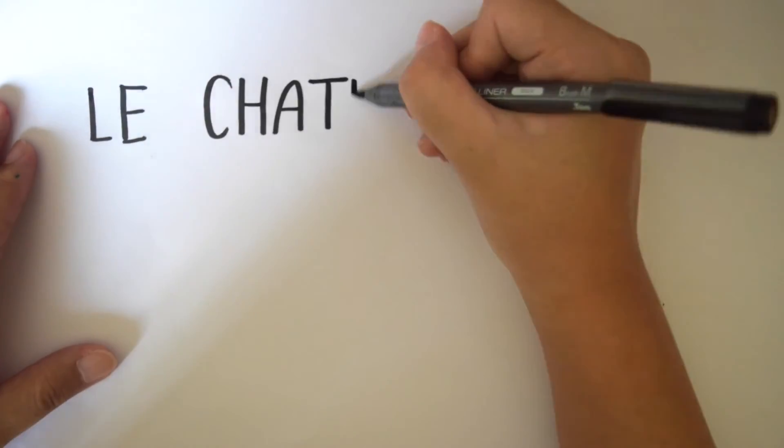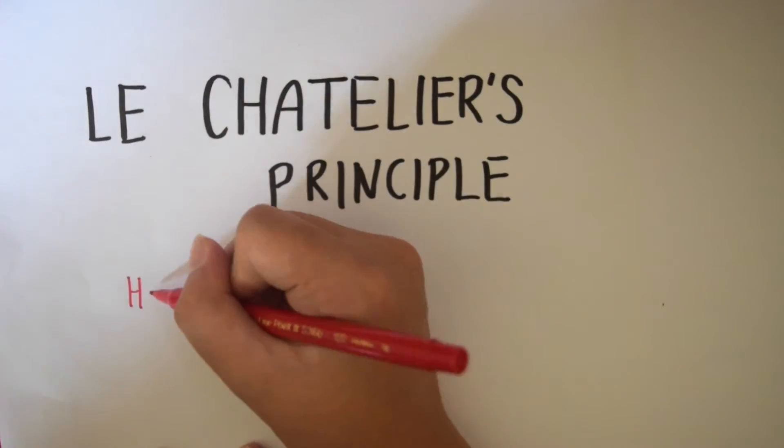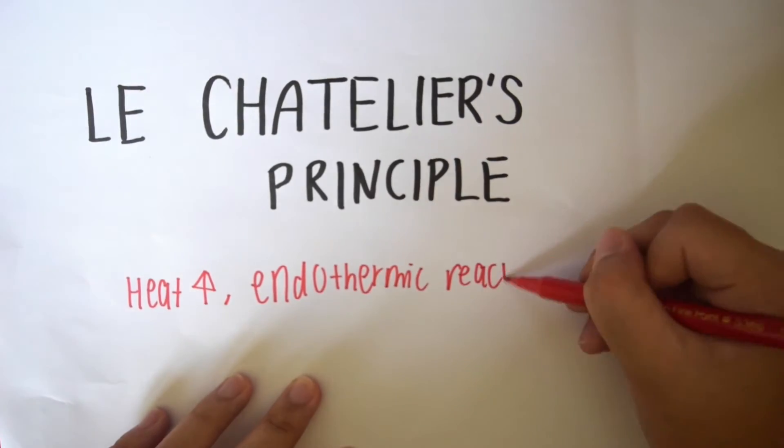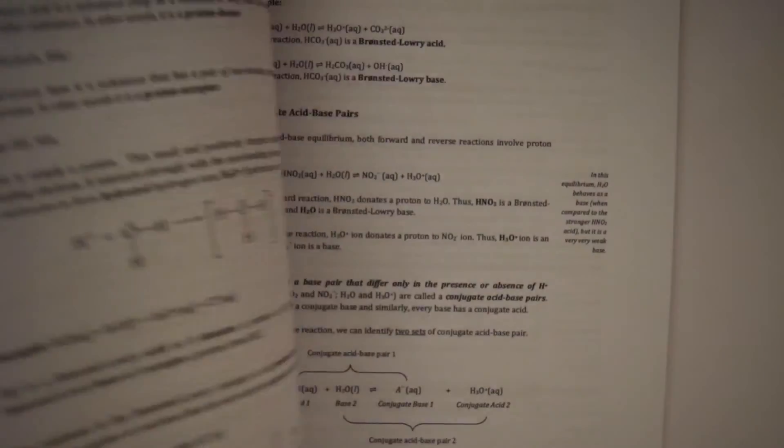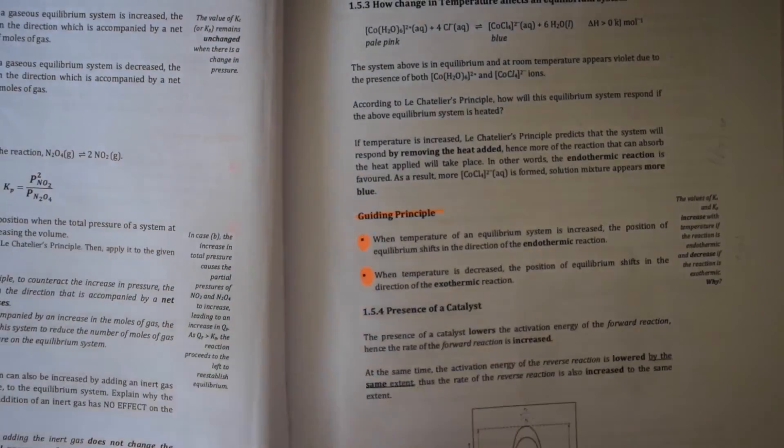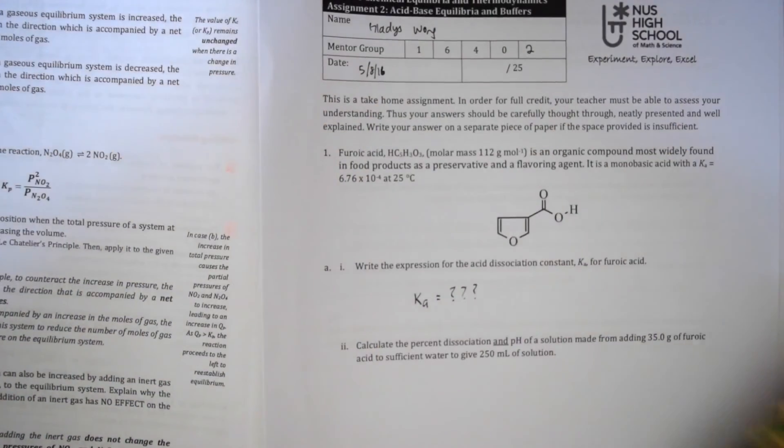We've all learnt about Le Chatelier's principle and how heat affects an equilibrium solution. When temperature increases, endothermic reaction is favoured, and when temperature decreases, exothermic reaction is favoured. But he was smarter than you think he is. He invented the principle not just for you to mark on, he invented it for you to have cool marks!